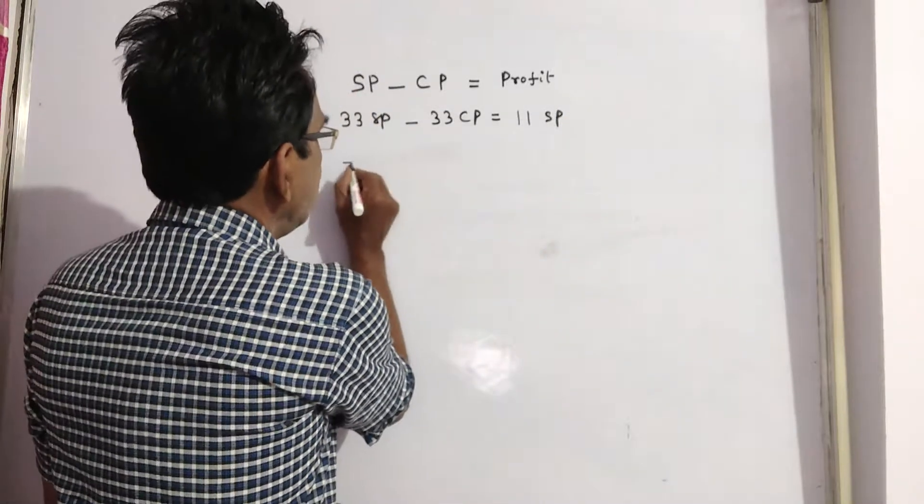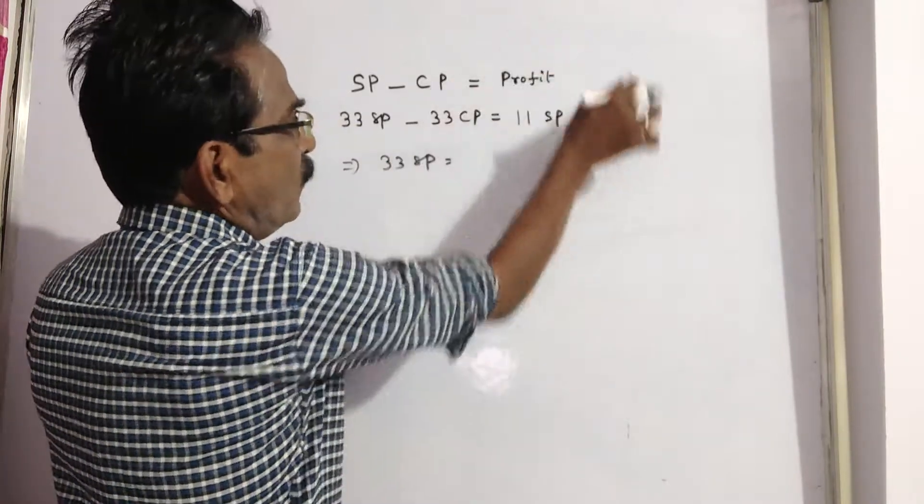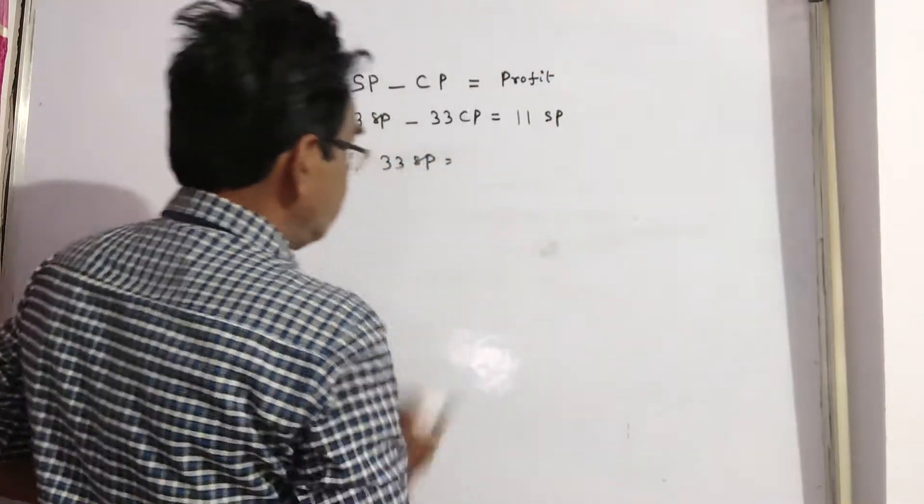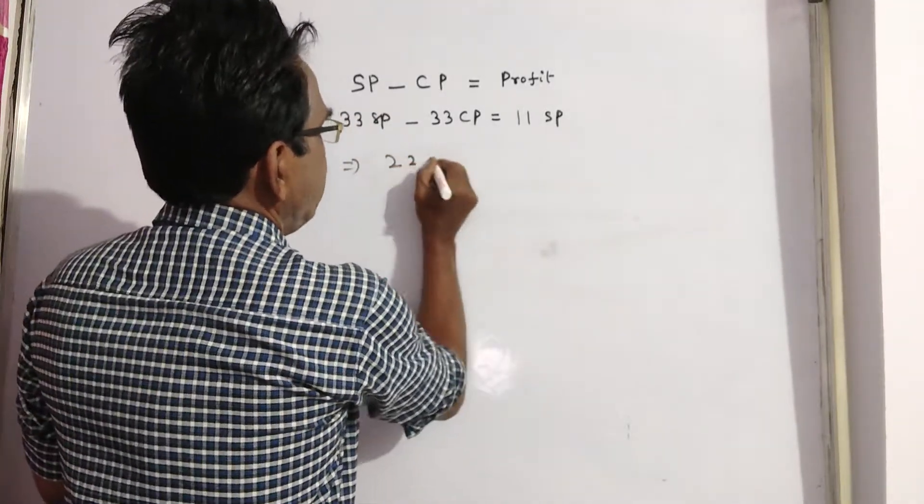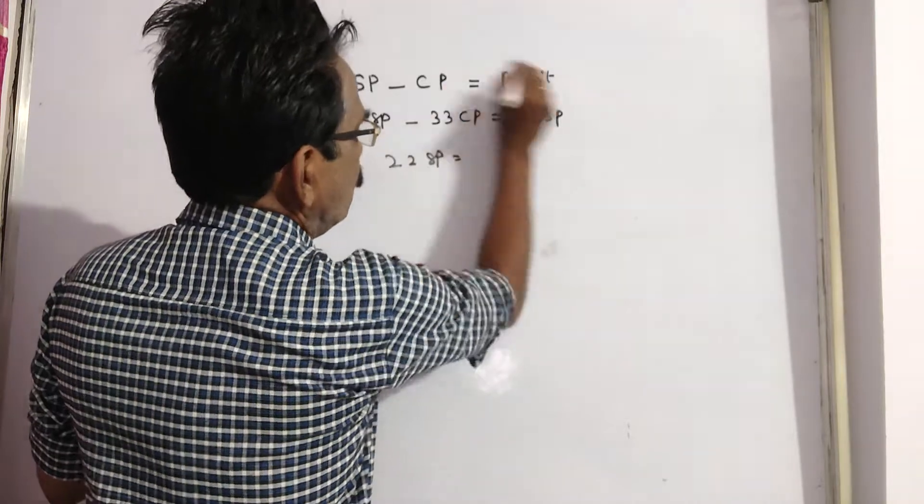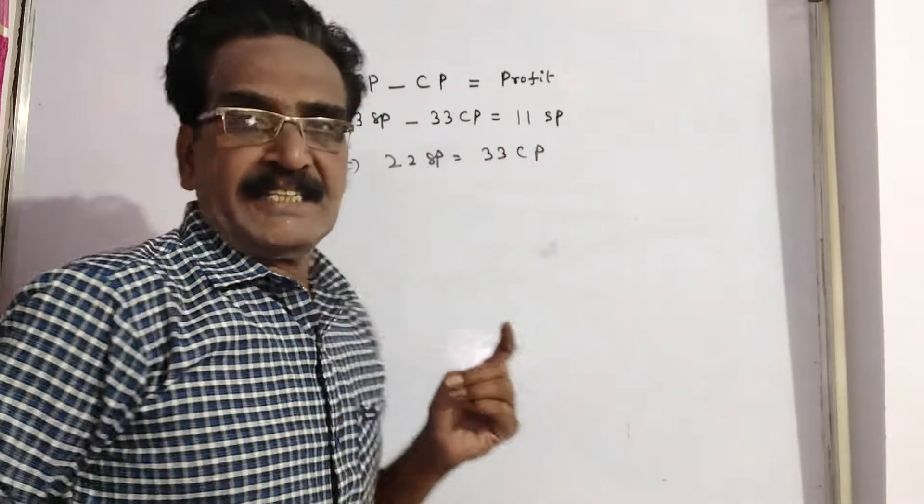It implies 33 SP minus 11 SP equals 33 CP. So 22 SP is equal to 33 CP.